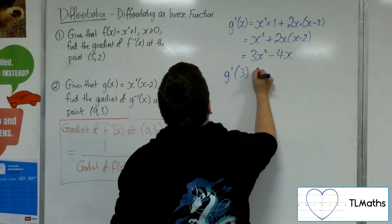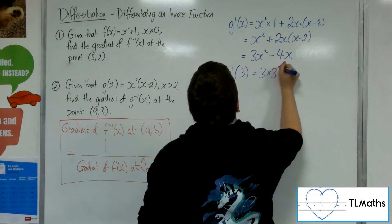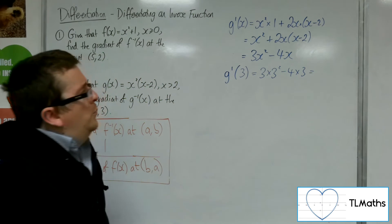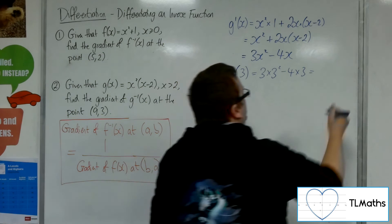So, I substitute in 3. 3 lots of 3 squared take away 4 lots of 3. So, 27 take away 12, so 15.